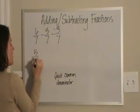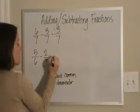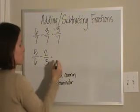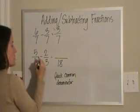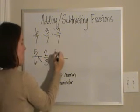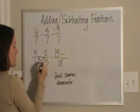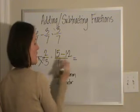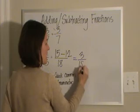Then if you have unlike denominators, you find your quick common denominator. 6 times 3 is 18. Then I cross multiply left. 5 times 3 is 15. Cross multiply right. 6 times 2 is 12. 15 minus 12 is 3. And I bring over my 18.